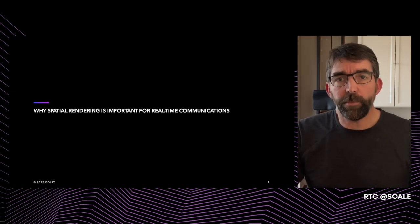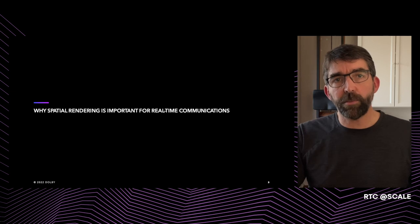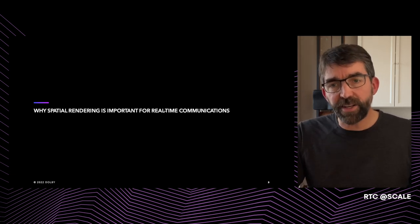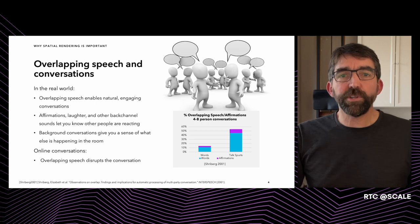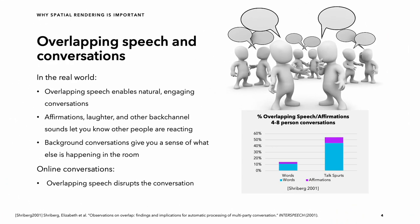So why is spatial rendering important for real-time communications? It does add realism to communicating in virtual environments. However, more importantly, it can significantly boost intelligibility. Spatial rendering is key for communicating effectively in the presence of other surrounding voices and noises. At in-person social gatherings, like a party or a networking event at a conference, there's a lot of overlapping speech. Studies show that in four to eight-person conversations, 10% of words overlap and 40% of talk bursts contain overlapping speech. The amount of overlapping speech increases significantly if you include affirmations and laughter, which are really important additional audio cues that help you understand how people are reacting and add context, making conversation much more engaging and natural.